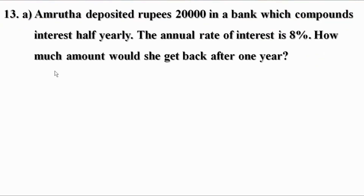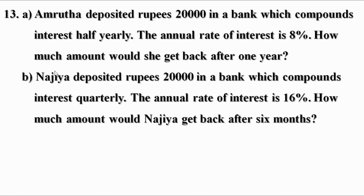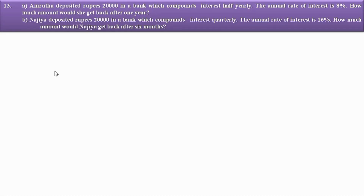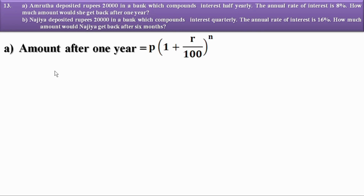Problem 13: Amrida deposited Rs. 20,000 in a bank which compounds interest half-yearly. The annual rate of interest is 8%. How much would she get back after 1 year? Najia deposited Rs. 20,000 in a bank which compounds interest quarterly. The annual rate of interest is 16%. How much would Najia get back after 6 months? We use the equation: Amount = P × (1 + R/100)^N.